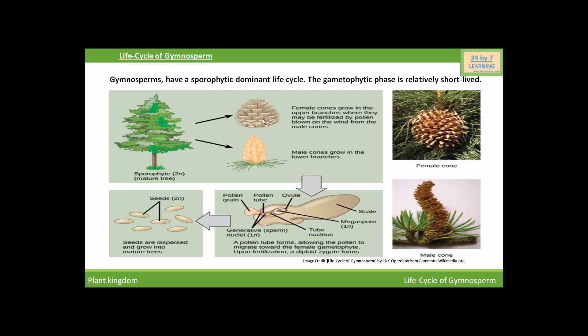This is the female cone and this is the male cone. Male cones grow on the lower branches and female cones grow on the upper branches of the tree. The male cone, called a microstrobilus, contains reduced leaves called microsporophylls. Microsporangia or pollen sacs are borne on the lower surface of the microsporophylls. Within the microsporangia there are microsporocytes, which undergo meiotic division to produce haploid microspores.